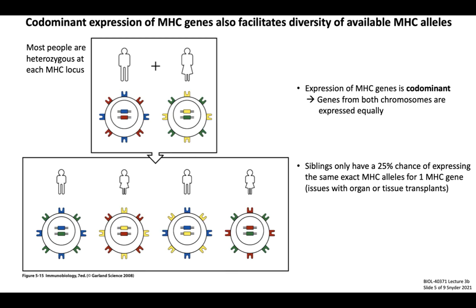If each individual is heterozygous at each MHC locus and MHC expression is codominant, sexual reproduction between two individuals results in progeny that are highly diverse with respect to MHC molecules. Direct siblings only have a 1 in 4 chance — a 25% chance — of expressing the same exact MHC alleles, considering just one single MHC gene. This degree of MHC mismatch will be important in future lectures discussing immune-mediated rejection of organ or tissue transplants, and explains why it's so difficult to find a compatible organ donor based on MHC matching.